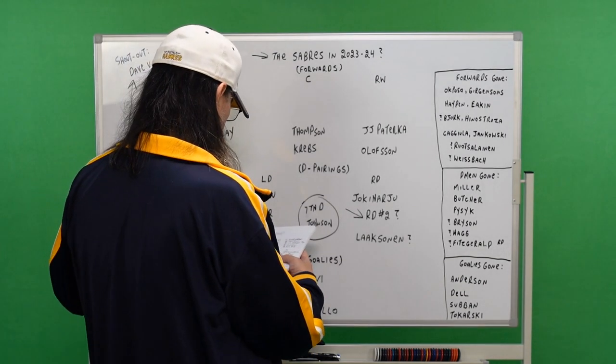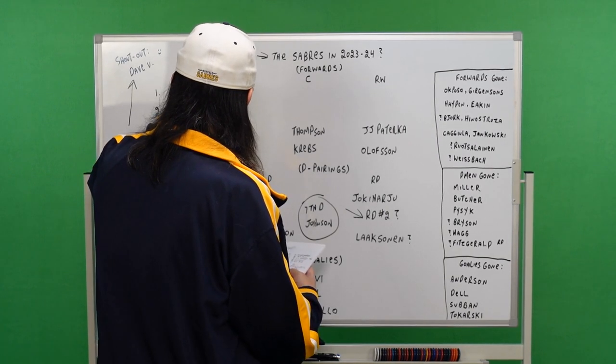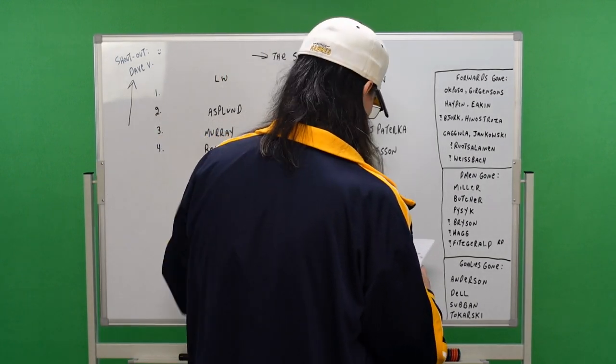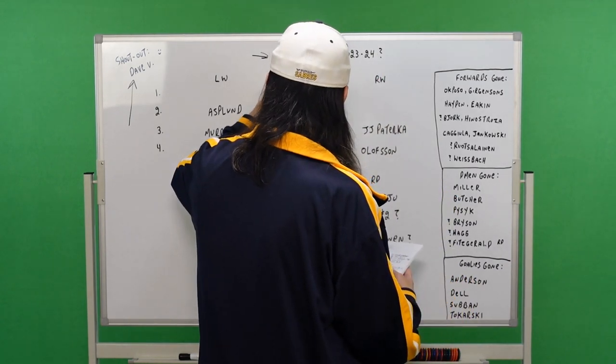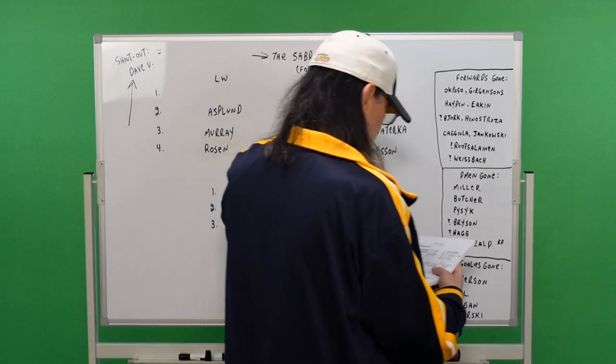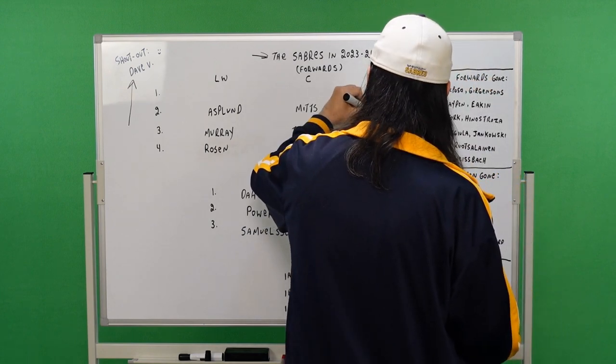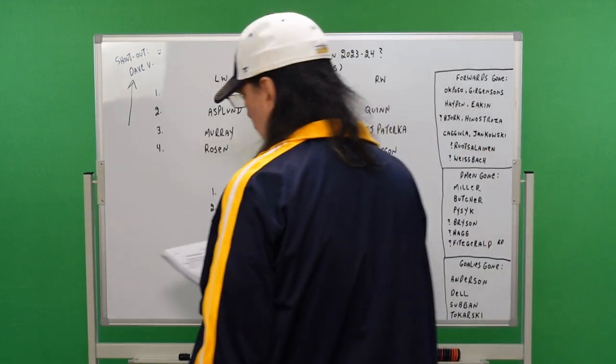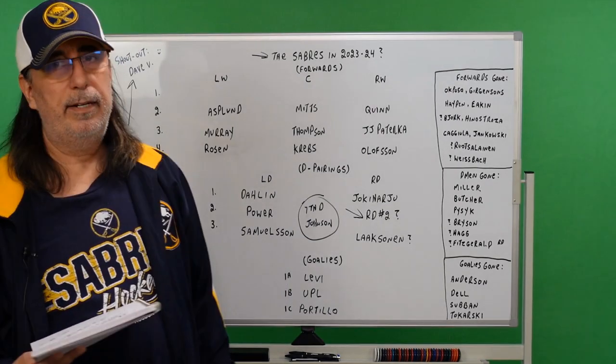Going up to the second line. And a bit of a compliment for this guy. Asplund comes in. I got Mittelstadt as our second line center and Jack Quinn. Asplund, Mittelstadt, and Quinn.